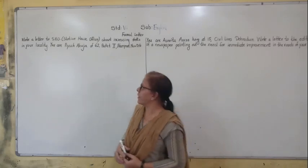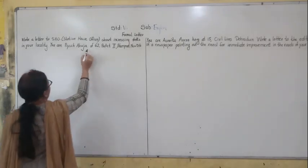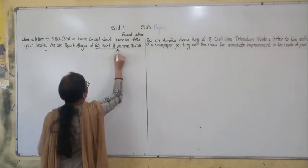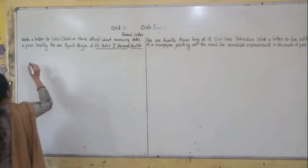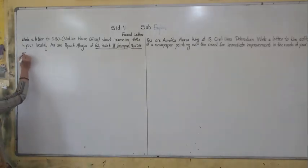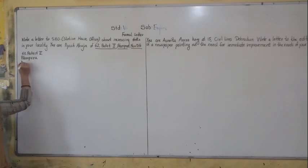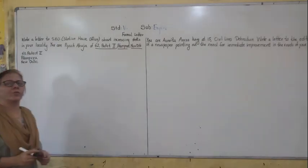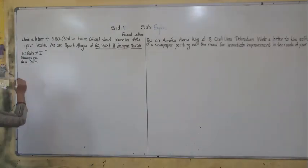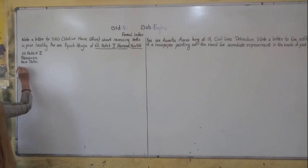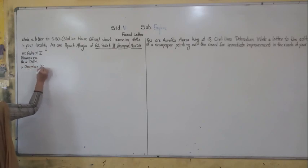First you have to write the sender's address. So the sender's address is: 62, Pocket 2, Pitampura, New Delhi. That address will come on the left side. After the address, we need to write the date — that is, 3 December 2020.